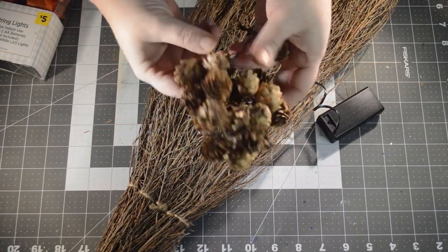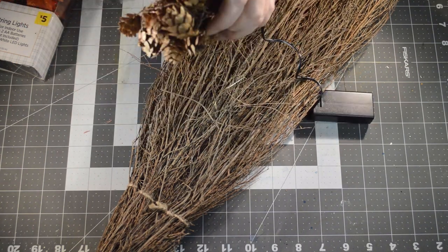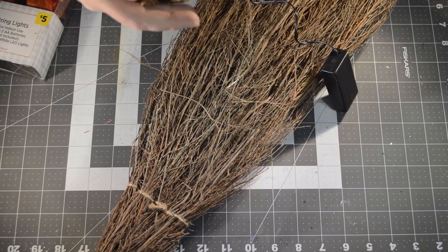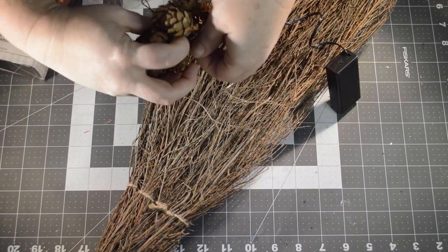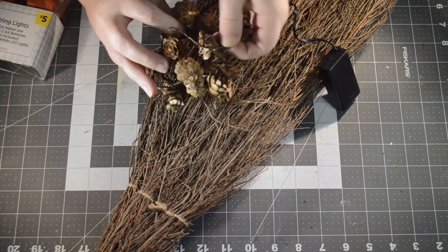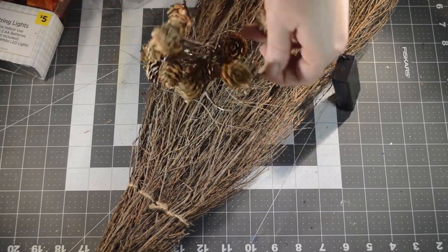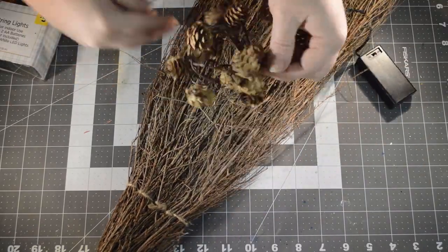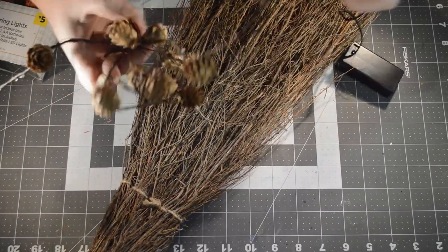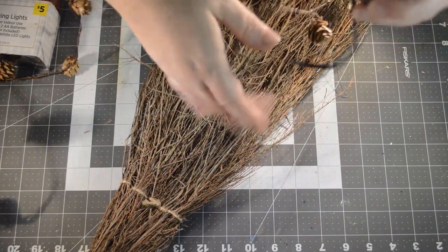For now I'm going to go ahead and start getting these string lights untwisted. This project is so quick and easy I know you're going to love it, and even a beginner crafter can put this together. It's just really fast and simple for anyone. I've got to get this knot undone. Okay, those pine cones didn't want to let go but I got them undone.